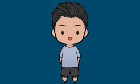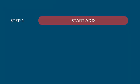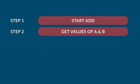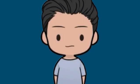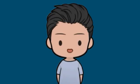Alternatively, the algorithm can be written as: Step 1: Start add. Step 2: Get values of A and B. Step 3: A plus B equals C. Step 4: Display C. Step 5: Stop. In design and analysis of algorithms, usually the second method is used to describe an algorithm. It makes it easy for the analyst to analyze the algorithm ignoring all unwanted definitions, and to observe what operations are being used and how the process is flowing.